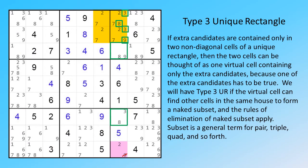If extra candidates are contained only in two non-diagonal cells of a unique rectangle, then the two cells can be thought of as one virtual cell containing only the extra candidates, because one of the extra candidates has to be true. We will have type 3 UR if the virtual cell can find other cells in the same house to form a naked subset, and the rules of elimination of naked subset apply.